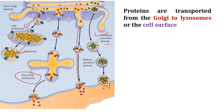The third route: proteins can be stored in distinct secretory granules for regulated secretion. Certain cells have regulatory secretory pathways — for example, hormones released from endocrine cells and digestive enzymes from pancreatic acinar cells. In the trans-Golgi network, proteins are stored in immature secretory granules where selective aggregation occurs due to the slightly acidic pH of the network, and the granule matures.